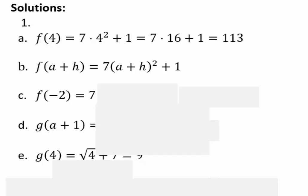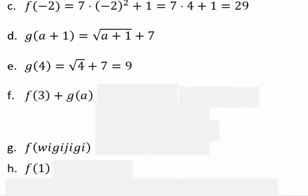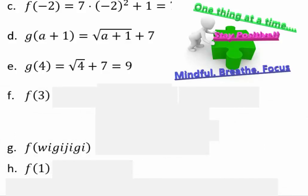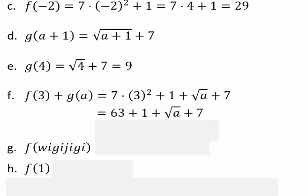Now the next one is interesting: f of 3 plus g of a. Remember, one thing at a time — cover f of 3, do that part first, which gives you 7 times 3 squared plus 1, then uncover the plus. So you have a plus, and then g of a, which is square root of a plus 7. And remember, you can only add like terms. So 9 times 7 is 63 plus 1, then square root of a plus 7. 63 and 1 is 64, 64 and 7 is 71, plus square root of a. Those are unlike terms, so they would have to stay.